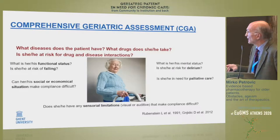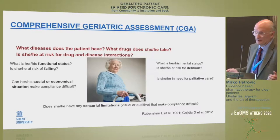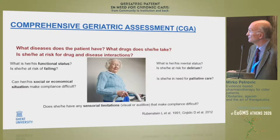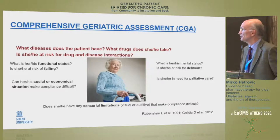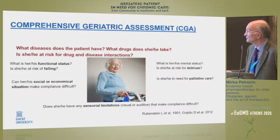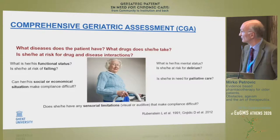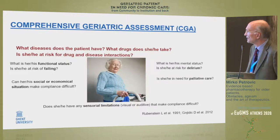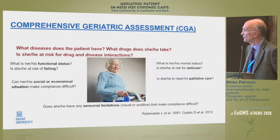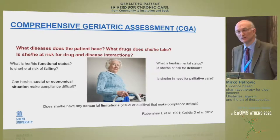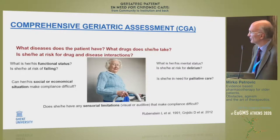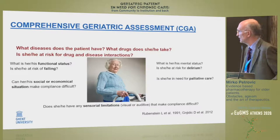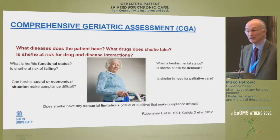What are the diagnoses? What medications is the patient taking? Are there any possible drug-drug interactions or drug-disease interactions? Going into the aspect of comprehensive geriatric assessment: what is the functional status of the patient? Is there any risk of falls? Is there any risk of delirium? Is the patient in need of palliative care — in the last phase of life? Also not to be forgotten, particularly in certain parts of Europe today, what is the social or economic situation of the patient? Can he or she afford every medication prescribed? Aspects like sensorial limitations — visual or auditory — which might impact compliance, should also be taken into consideration.